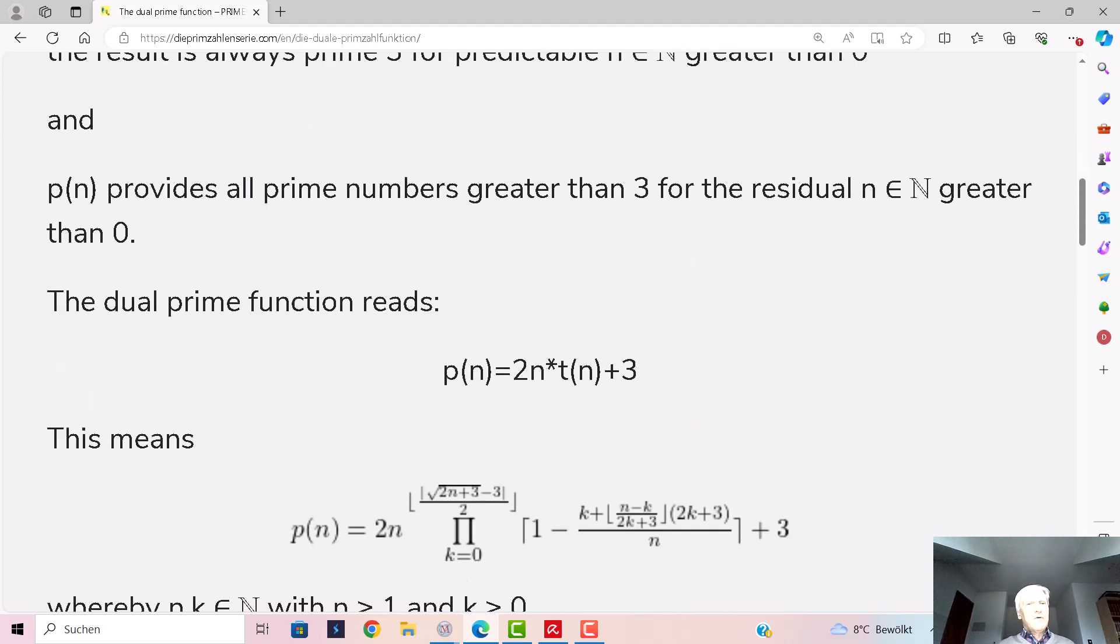The dual prime function reads p(n) = 2n times the product plus 3.